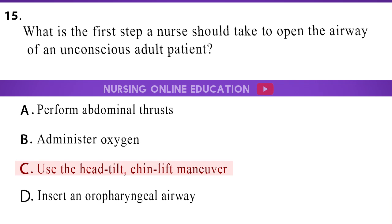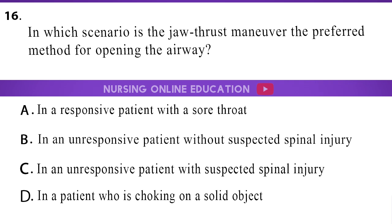The answer is option C: Use the head tilt, chin lift maneuver. In which scenario is the jaw thrust maneuver the preferred method for opening the airway? A. In a responsive patient with a sore throat. B. In an unresponsive patient without suspected spinal injury. C. In an unresponsive patient with suspected spinal injury. D. In a patient who is choking on a solid object.